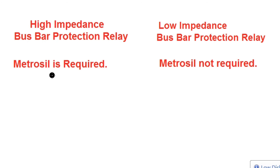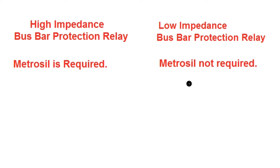Since a high impedance is connected in series with the relay for each phase, during an internal fault condition a high voltage spike may occur, which may damage the relay insulation. Therefore, a metroseal (surge protection device) is required, connected in parallel with the resistance and relay combination — one metroseal per phase for high impedance bus bar protection relay. In case of low impedance bus bar protection relay, no such metroseal is required.